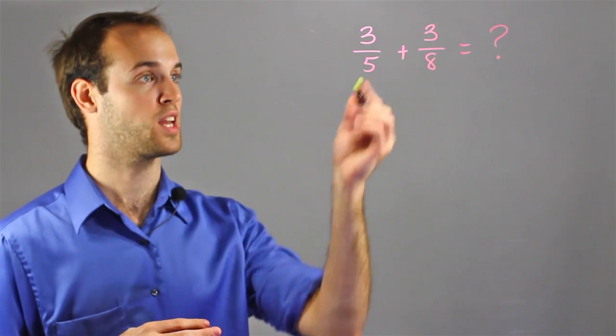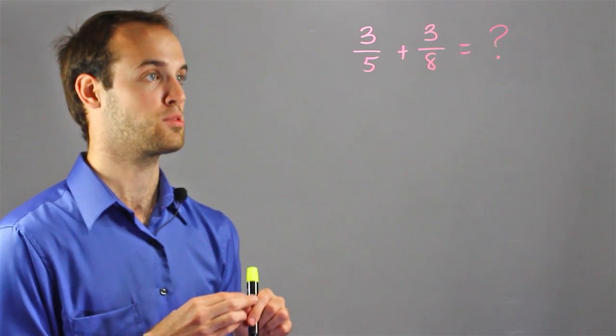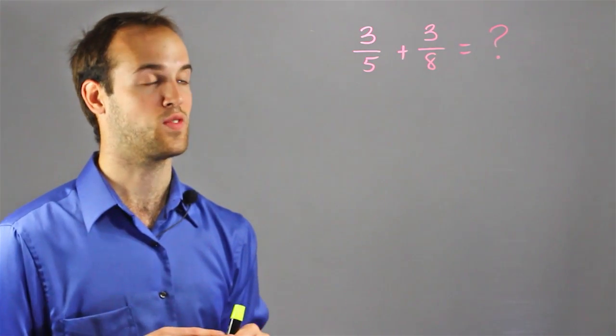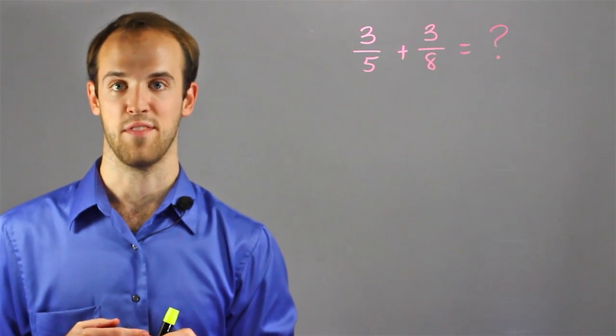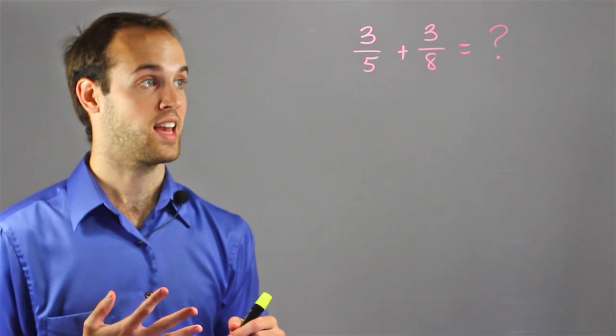So let's suppose that I want to add 3 fifths plus 3 eighths. The first thing I would need to do is find the common denominator between 5 and 8, which in this case is 40.